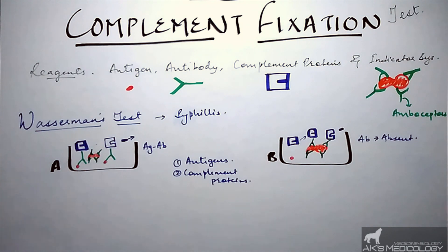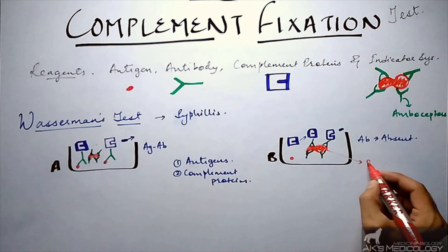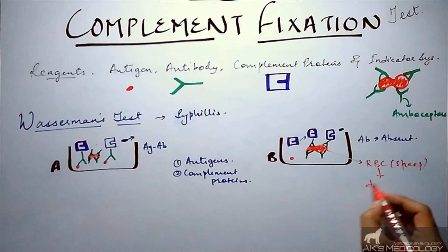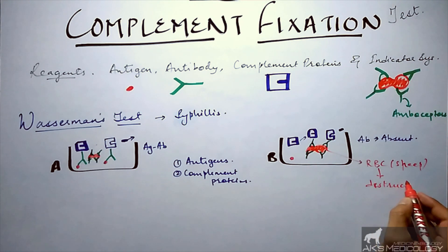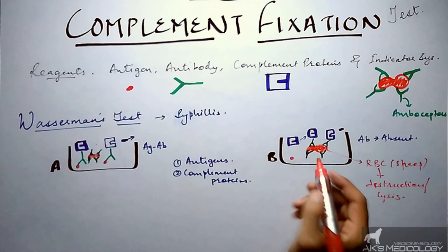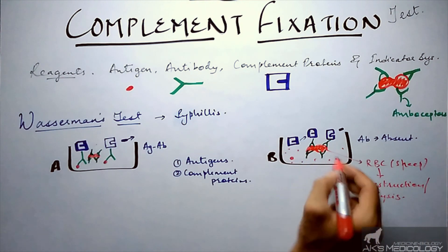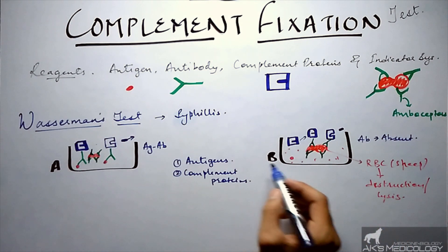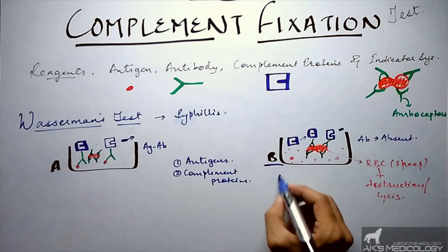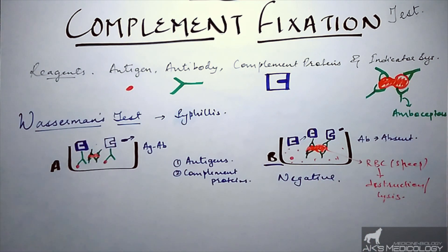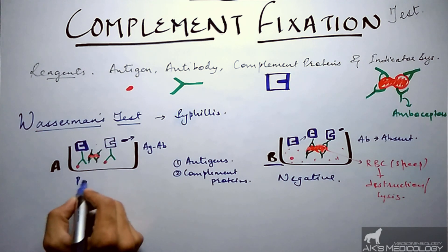This activation of the complement system in vial B results in lysis of the sheep RBCs, which is visible in the vial. Importantly, although RBC destruction or lysis is seen in vial B, this test result is negative. Conversely, vial A, which shows no reaction, is the positive result.